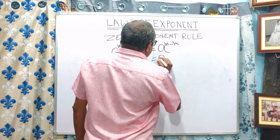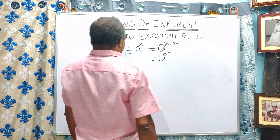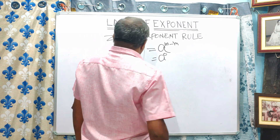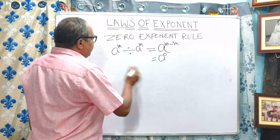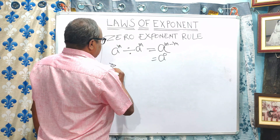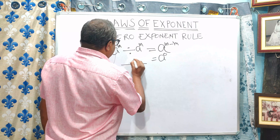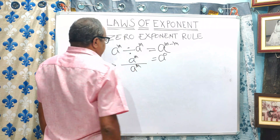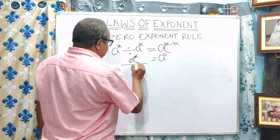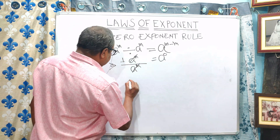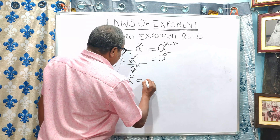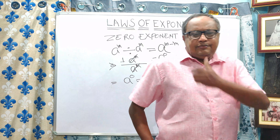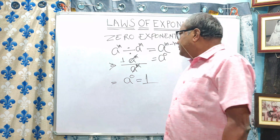This is called the zero exponent rule. A to the power m divided by A to the power m — these two cancel, giving 1. So A to the power 0 is equal to 1. Any number having the exponent 0 is always equal to 1.